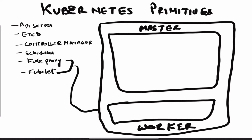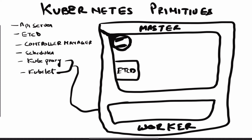The first primitive is the API server. The API server basically exposes the Kubernetes API to the external world — to end users like you and me, or to the worker nodes. So if you want to deploy your application, you talk to the API server. It provides you a platform to connect to your Kubernetes cluster, and the worker nodes also use this API to talk to the master.